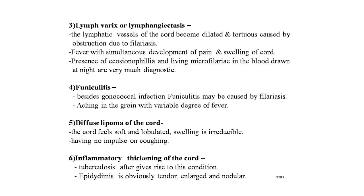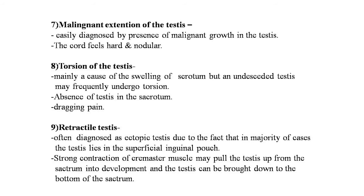The third entity is lymphangiectasis and lymphangioma. The lymphatic vessels of the cord become dilated and tortuous caused by obstruction due to filariasis — fever with simultaneous development of pain and swelling of the cord. Presence of eosinophilia and living microfilaria in the blood drawn at night are diagnostic. Funiculitis besides gonococcal infection may be caused by filariasis — aching in the groin with variable degree of fever. Diffuse lipoma of the cord: the cord feels soft and lobulated, swelling is irreducible with no impulse on coughing. Inflammatory thickening of the cord: tuberculosis gives rise to this condition; epididymis is obviously tender, enlarged, and nodular. Malignant extension of the testes: easily diagnosed by the presence of malignant growth in the testes; the cord feels hard and nodular.